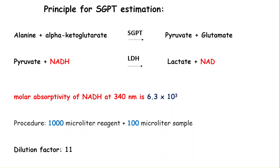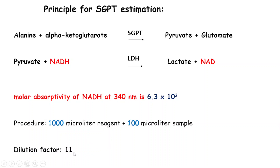Since we are calculating the factor for enzyme SGPT, here I have shown the principle for SGPT estimation. In this principle, NADH is the light-absorbing compound, so we will use the molar absorptivity of NADH at 340 nanometers for the factor calculation. The molar absorptivity of NADH is constant at 6.3 × 10³. During the analytical procedure for SGPT estimation, we add 1 ml reagent and 100 microlitre sample, giving a reagent-to-sample ratio of 11 — so the dilution factor is 11.